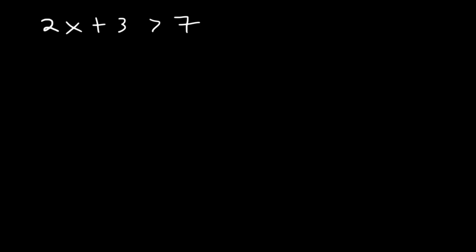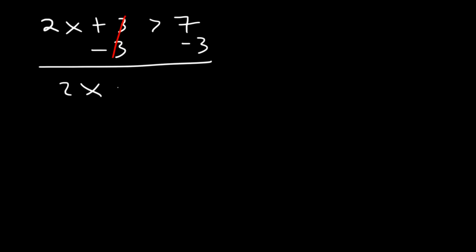The only difference is when you have the solution, you should plot it on a number line. Let's begin by subtracting both sides by 3. These will cancel, so 2x is greater than 7 minus 3, which is 4. Next, let's divide both sides by 2, so x is greater than 4 divided by 2, which is 2.